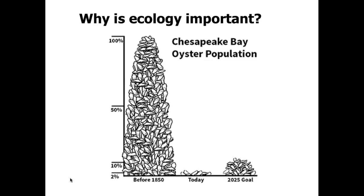Closer to home, for those in the Virginia area: before the 1850s, the Chesapeake Bay had tens of millions of oysters, yet through a combination of pollution and overfishing, less than two percent of the original pre-1850s oysters still survive in the Bay. We now have a goal of trying to get that back up to 10 to 15 percent of that initial pre-human population — something ecologists are working to improve.